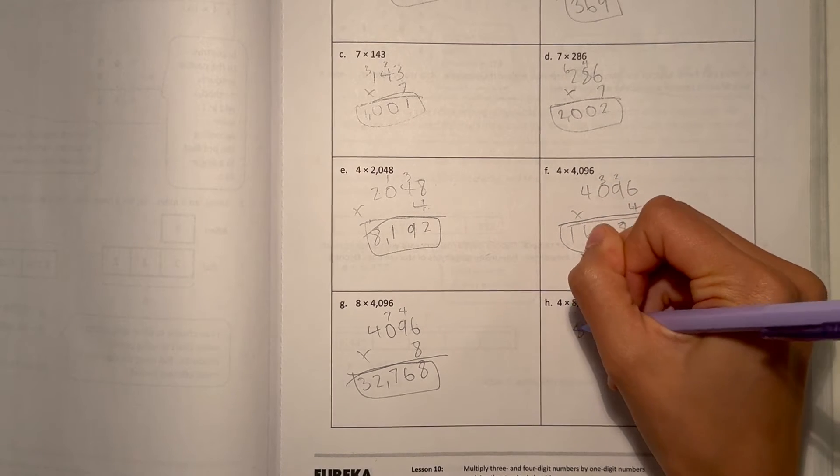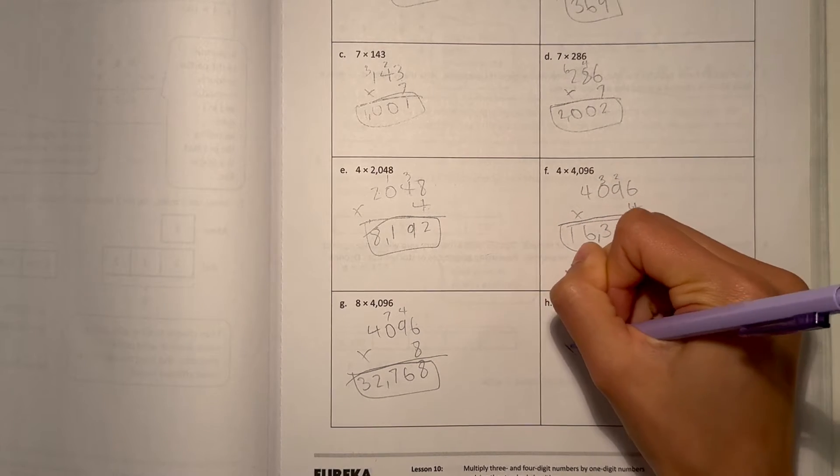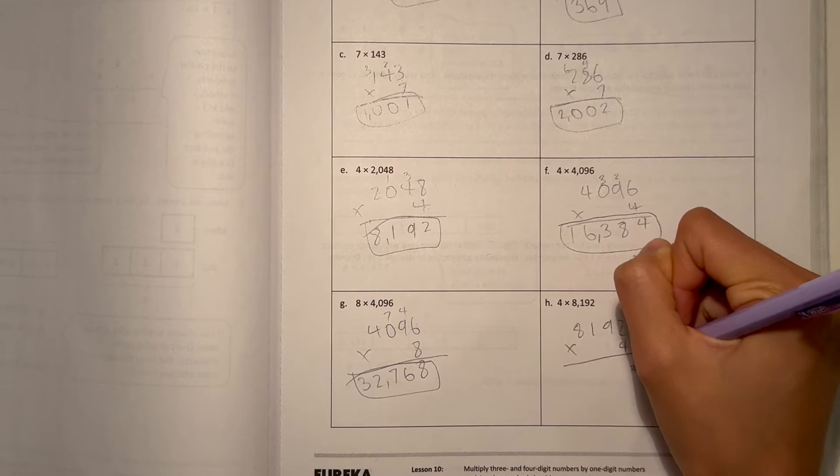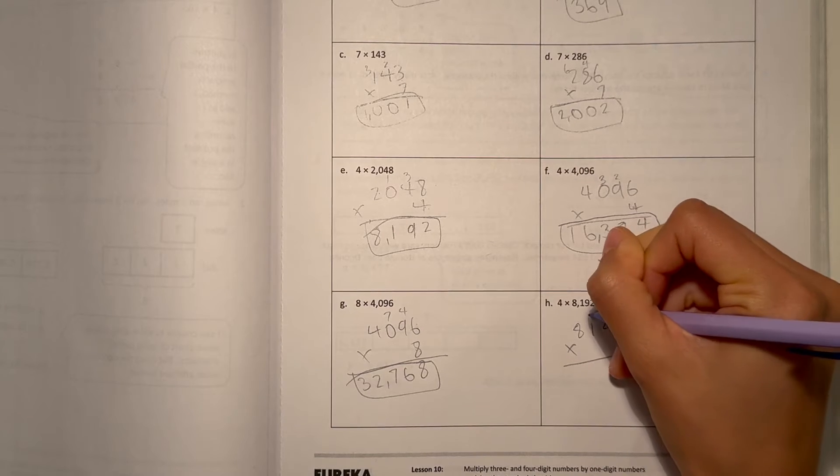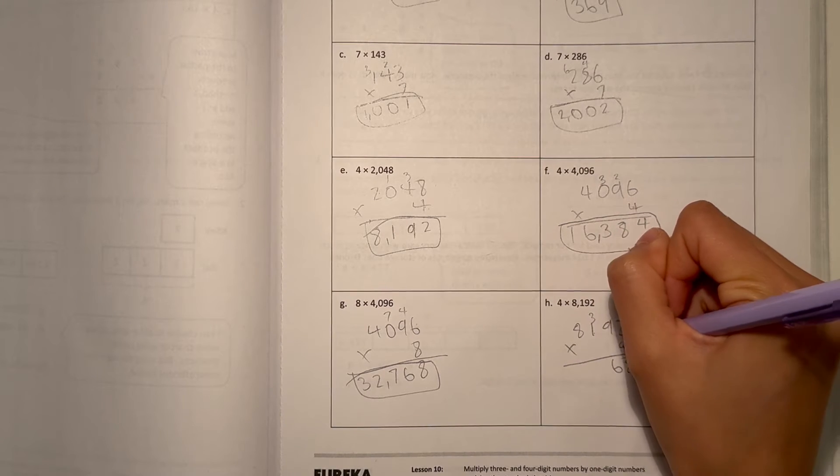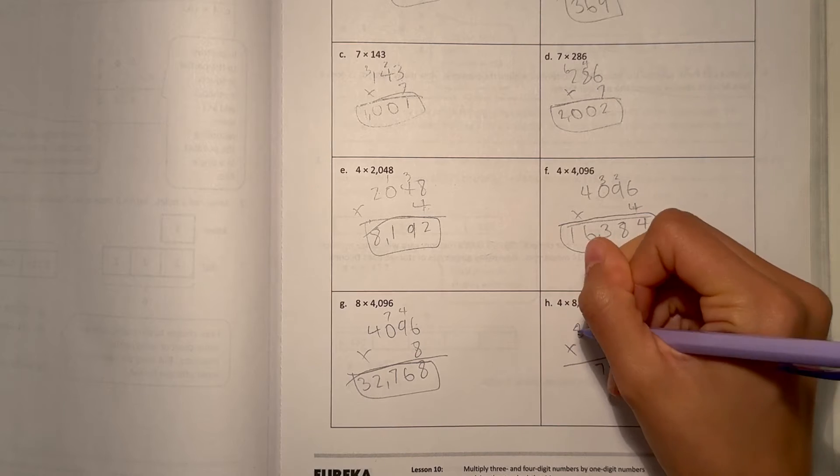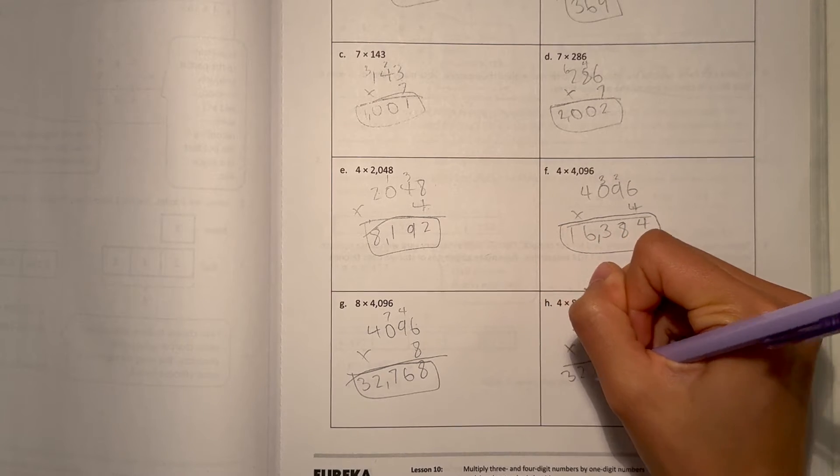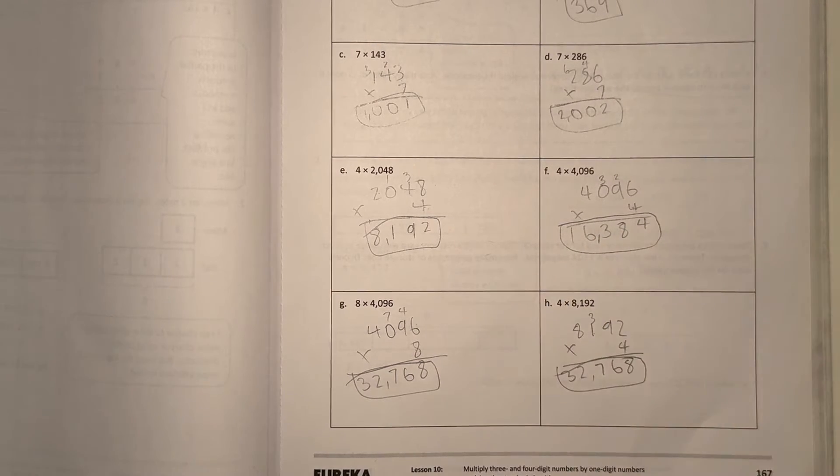Now, H, 8,192 times 4. 2 times 4 is 8. 9 times 4 is 36. 1 times 4 is 4, plus 3 is 7. And 8 times 4 is 32. So 32,768.